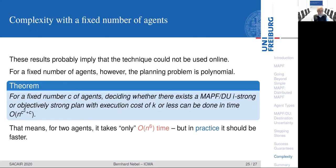That is bad. But of course when you look at special cases, like when you have only a fixed number of agents, then things are a bit better. We were able to show that for a fixed number C of agents, deciding whether there exists a MAPF-DU I-strong or objectively strong plan with execution costs of K or less can be done in time O(N to the power of C squared plus C), where N is the number of nodes. That means for example that for two agents, it takes only N to the power of six time, but in practice that should be faster.